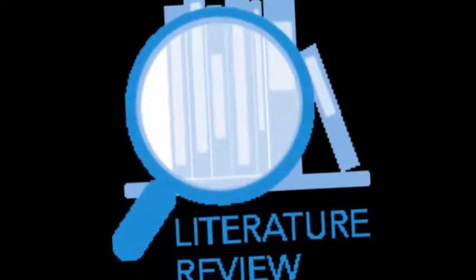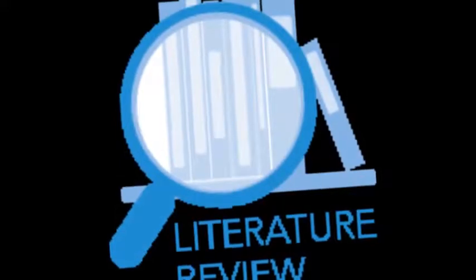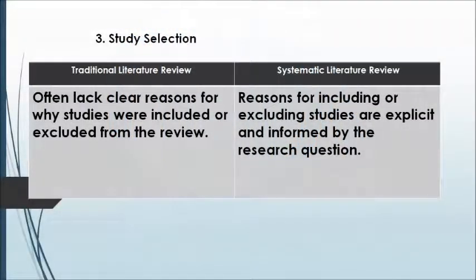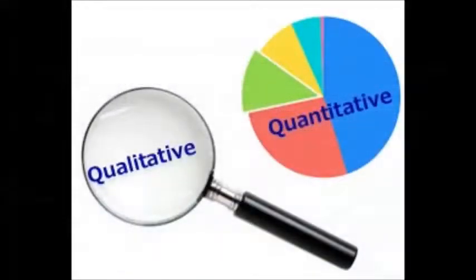The third difference is the selection of studies. In a traditional literature review, there is often no clear reason why studies are included or excluded from the review. In a systematic literature review, however, the reasons for including or excluding studies are explicit and informed by the research question.